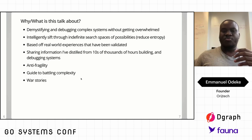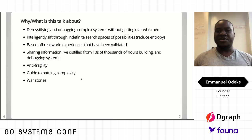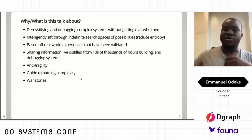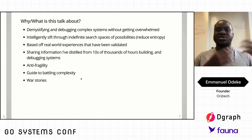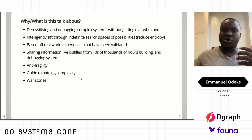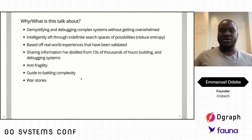In this talk, you'll probably learn how to intelligently sift through indefinite search spaces of possibilities. If today I told you I'm getting a 400 error or just vaguely said I'm having an error uploading my photos — where do we start? What could go wrong? And if you have larger systems, there are more states of disorder. Perhaps you'll learn how to reduce entropy. These are validated ideas based on real-world experiences — information distilled from tens of thousands of hours building and debugging systems.